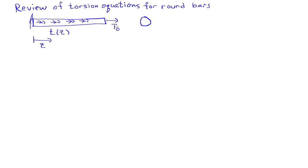So just like in all problems in mechanics, there will be an equilibrium equation. In this case that'll be dT/dz plus lowercase t is equal to zero. So that's the main equilibrium equation, and capital T is the internal torque that one sees on any section cut.